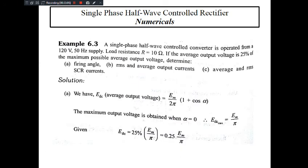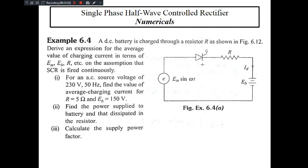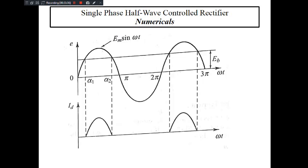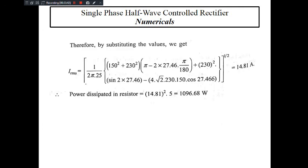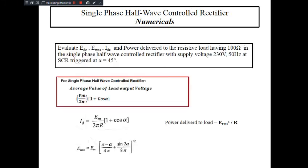Another small problem: a single phase half wave controlled converter is operated from 120 V, 50 Hz. Load resistance is 10 Ω. If the average output voltage is 25 percent of the maximum possible average output voltage, determine the required parameters. There are around 4 problems provided — please go through them. If you have any difficulty, let us know and we will try to explain. We will stop here.